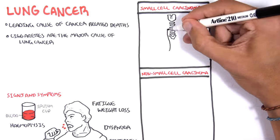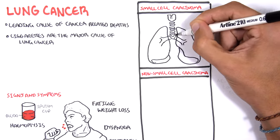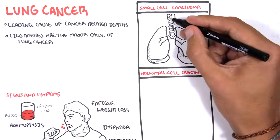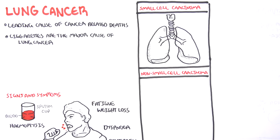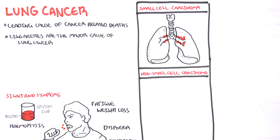Small cell carcinoma often presents already at its metastatic stage. The tumor often grows proximally close to the hilum. Small cell carcinoma also involves neuroendocrine cells, which we will talk about later.